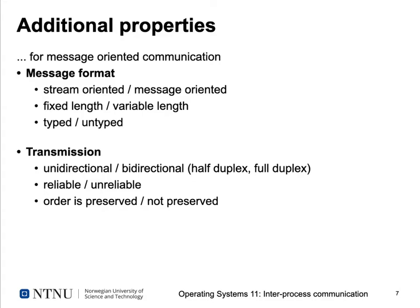Transmission can be unidirectional — where one process always sends and the other always receives, useful when sending commands to worker processes with no confirmation needed. Bidirectional communication means all participating processes can be both sender and receiver. Older textbooks call these half-duplex and full-duplex: half-duplex means sender and receiver take turns, full-duplex allows simultaneous two-way communication.